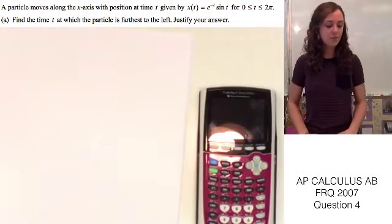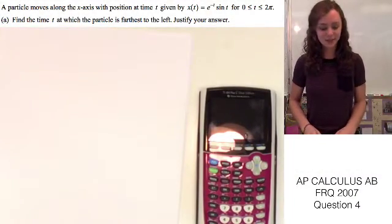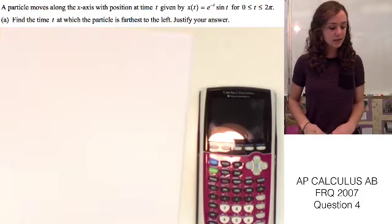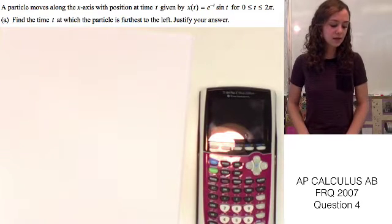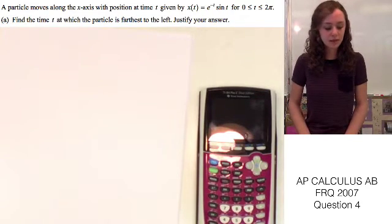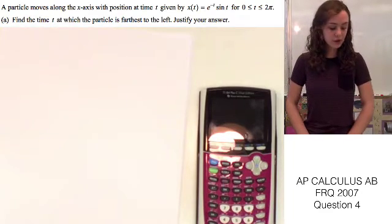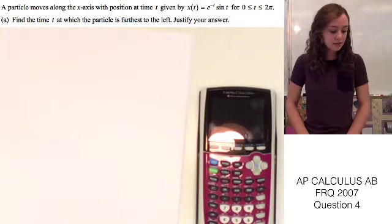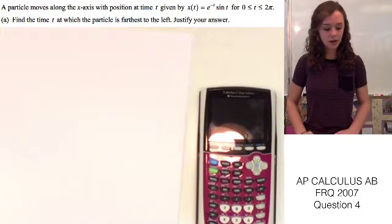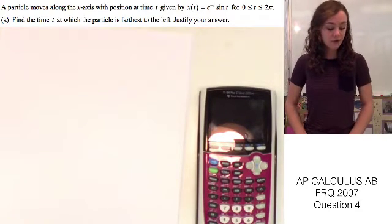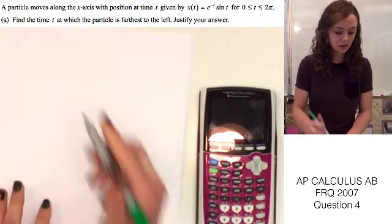Today I'm going to be doing a problem from the 2007 AP Calculus test, question number four. This question says a particle moves along the x-axis with position at time t given by x of t equals e to the negative t times sine t, for t between 0 and 2 pi. Part A asks us to find the time t at which the particle is furthest to the left, and we need to justify our answer. To do this, we're going to have to find the derivative of the function given in the introduction.